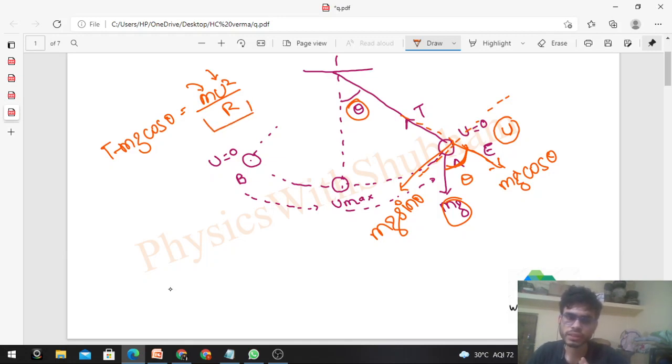So T minus mg cos theta equals the centripetal force. So tension value is mg cos theta plus mu² upon r. So if you know u, u means speed at that point, and theta, then you can easily find out the value of tension. So this is the question.